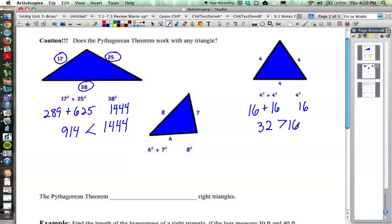Our last example over here, 6 squared, 7 squared, and 8 squared, 8 being the longest side. So 6 squared is 36, 7 squared is 49, 8 squared is 64. 36 plus 49 is 85, and 85 is definitely greater than 64.